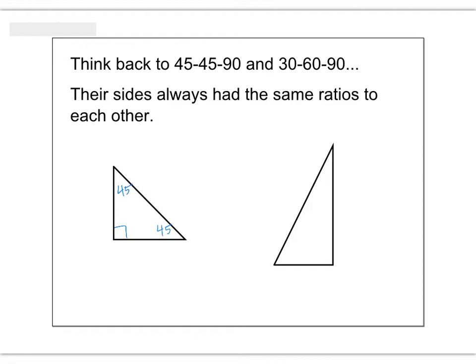If you have a triangle where two angles are the same, you're also going to have two sides that are congruent. So opposite those angles, this side and this side would be congruent to each other. So if this leg is x, this leg would also be x. The hypotenuse is going to be whatever the length of that leg is times square root 2. The legs would be x and x, and the hypotenuse, or the diagonal of the square, is that leg times root 2.